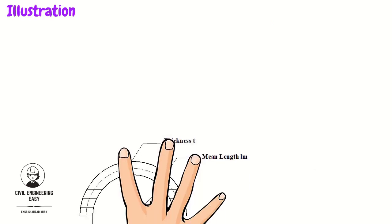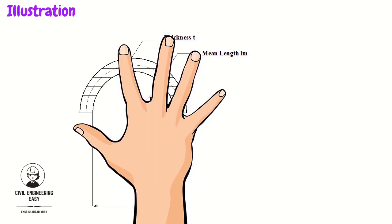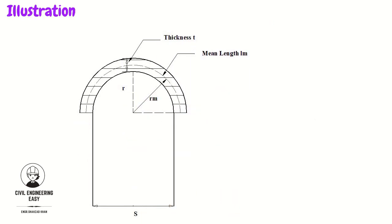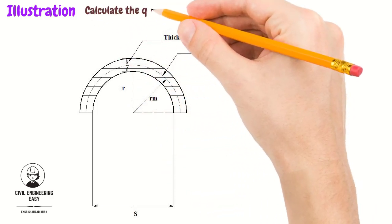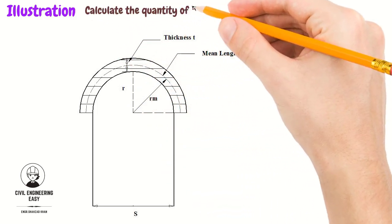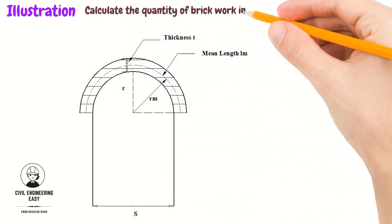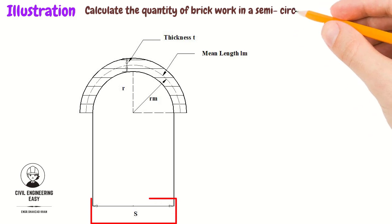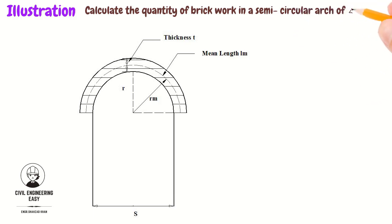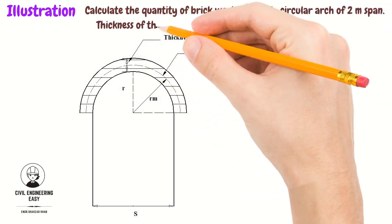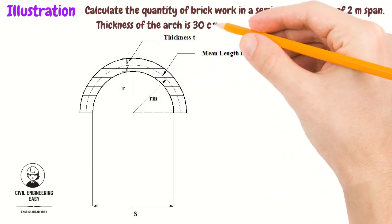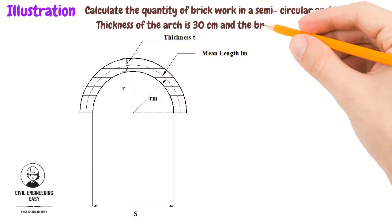For better illustration, consider a numerical example. It is given to calculate the quantity of brickwork for a semicircular arch of 2-meter span. The thickness of the arch is 30 cm and the breadth of the wall is 40 cm.